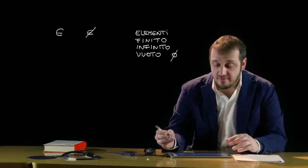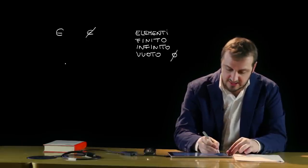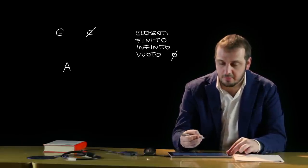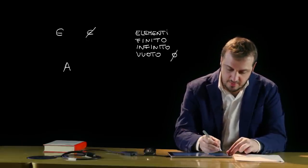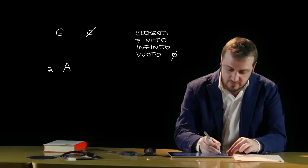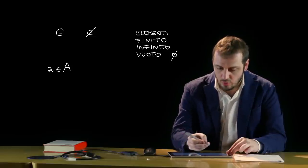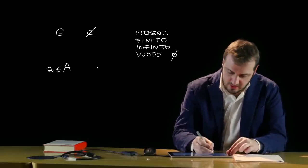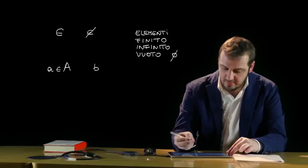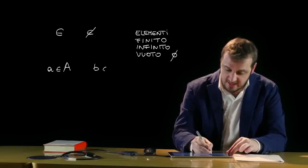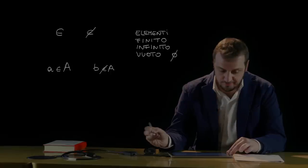Gli insiemi vengono identificati con lettere maiuscole, mentre gli elementi appartenenti all'insieme vengono identificati con lettere minuscole. Ad esempio, l'elemento a appartiene all'insieme A. Se invece un elemento non appartiene all'insieme A, lo indicheremo in quest'altro modo.